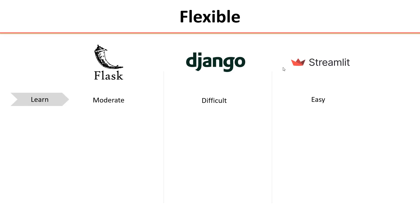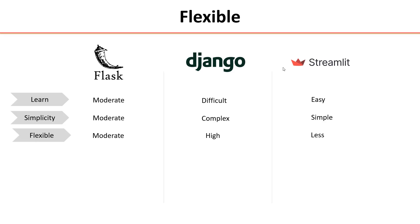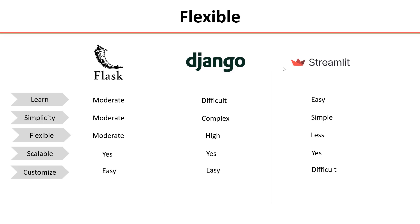Coming to flexibility, it is very easy to learn Streamlit compared to Django and Flask, whereas Django is the most difficult. From a simplicity point of view, Django is most complex and Streamlit is very simple. We have high flexibility in Django and Flask, whereas we have very little flexibility in Streamlit. Scalability-wise, we can scale our application in all three frameworks. We can easily customize our application in Django and Flask, whereas in Streamlit it is difficult to customize and sometimes we cannot customize our application.